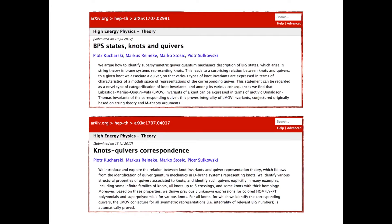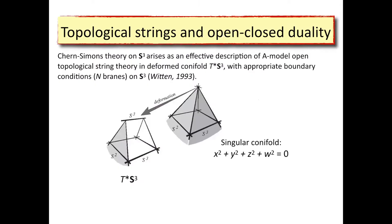The first papers where we found this relation between knots and quivers are the papers from 2017. If you like to have a slower start, you can look carefully at these two papers. In this talk, I will try to summarize what has happened since that time.